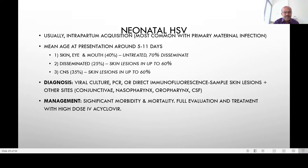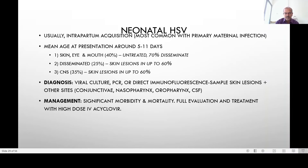Neonatal herpes is usually an intrapartum acquisition, most commonly after the primary maternal infection. The mean age of presentation is around 5 to 11 days, and there are three main presentations. The skin, eye, and mouth type involves 40% of cases; if untreated, 70% can disseminate, so don't take it lightly. The disseminated type presents like septicemia and is seen in 25% of cases, with skin lesions present in about 60% of those cases.